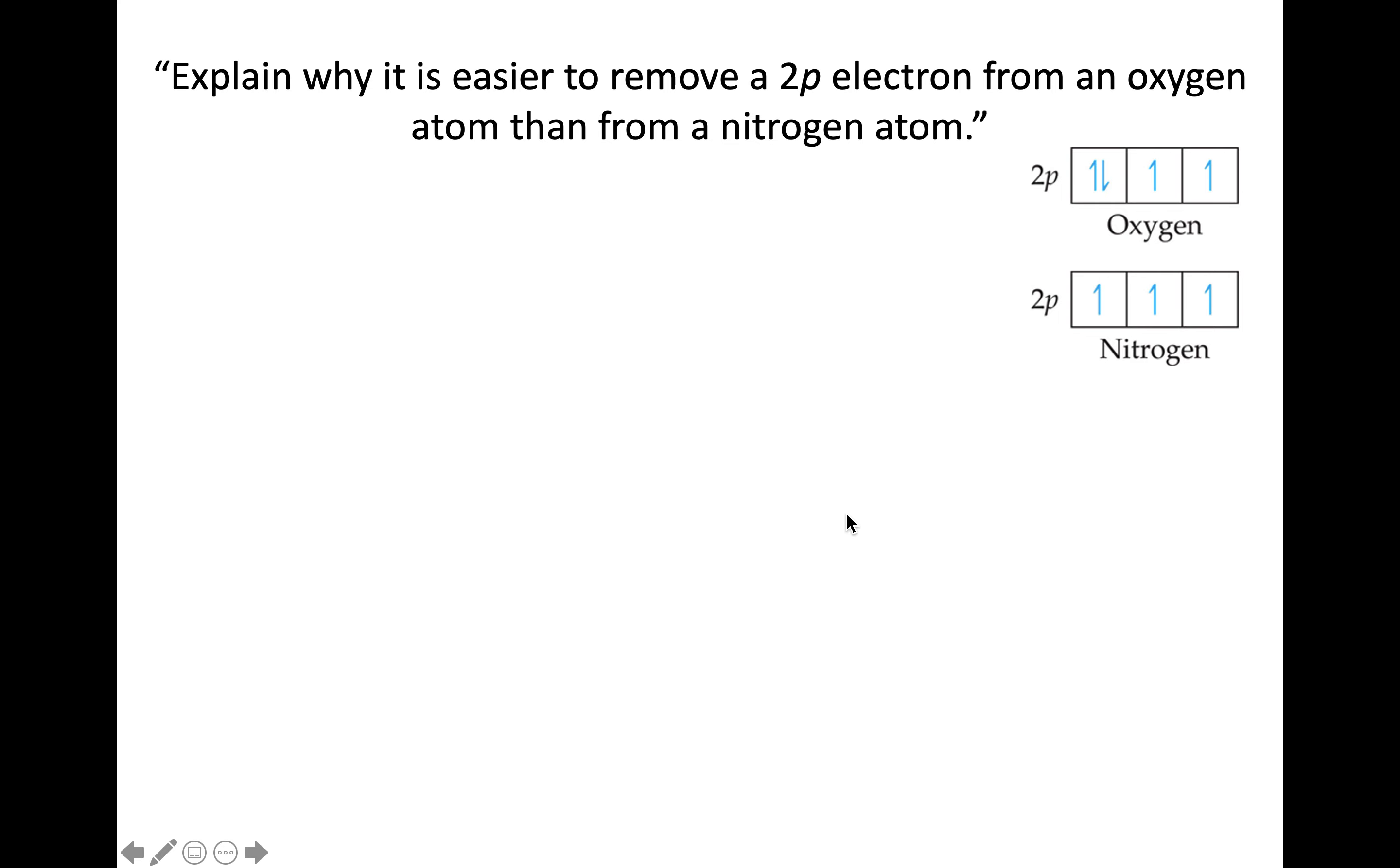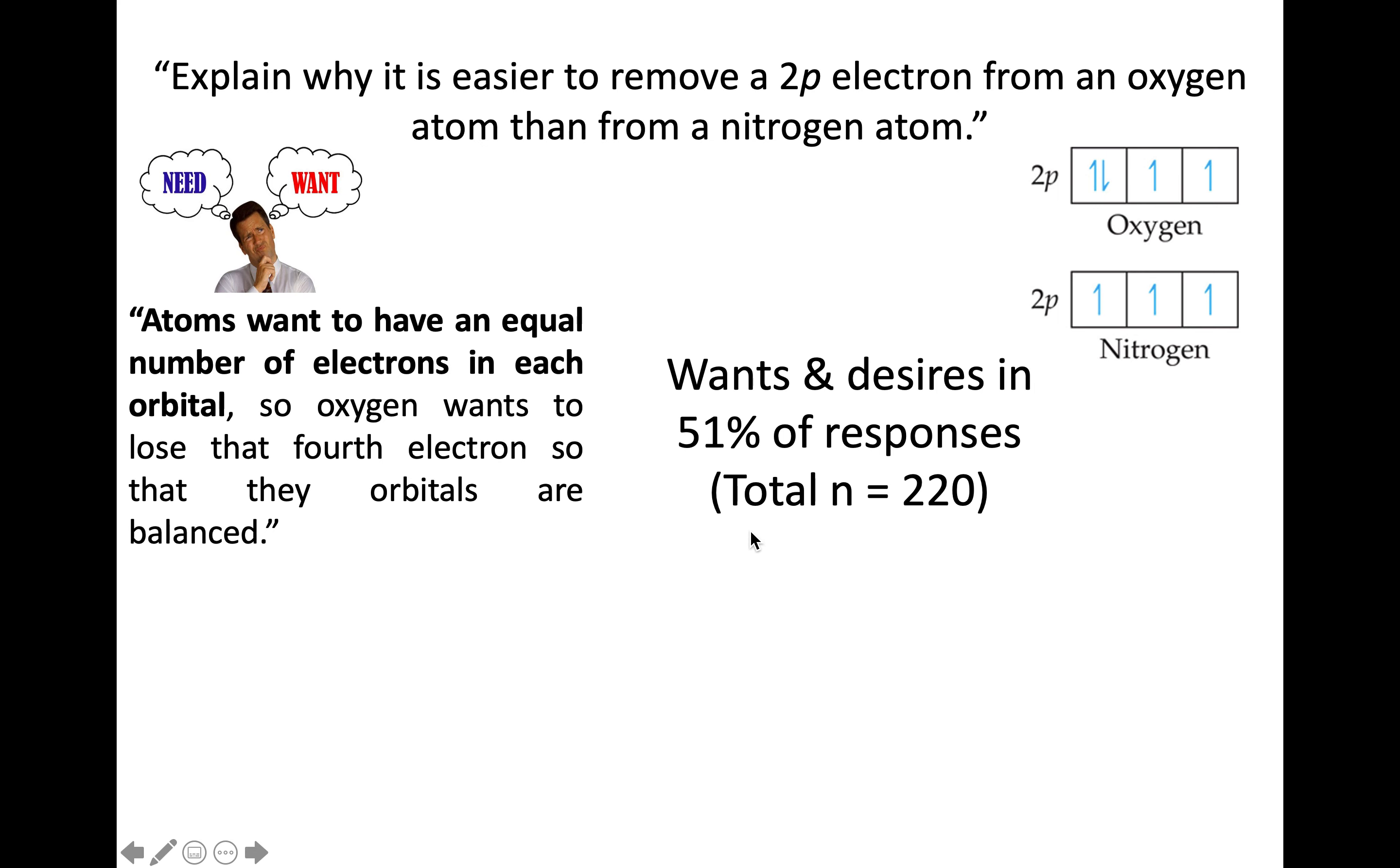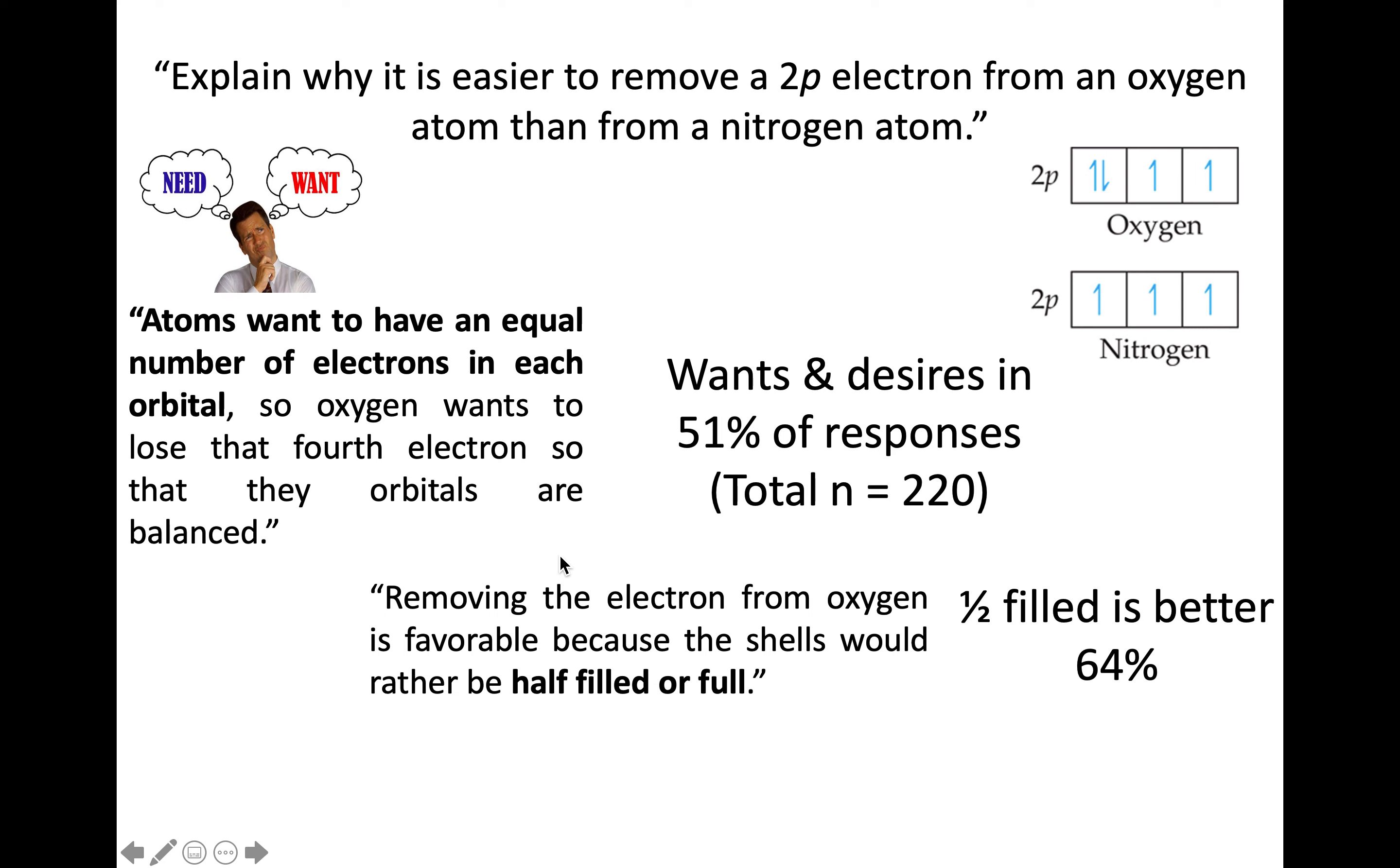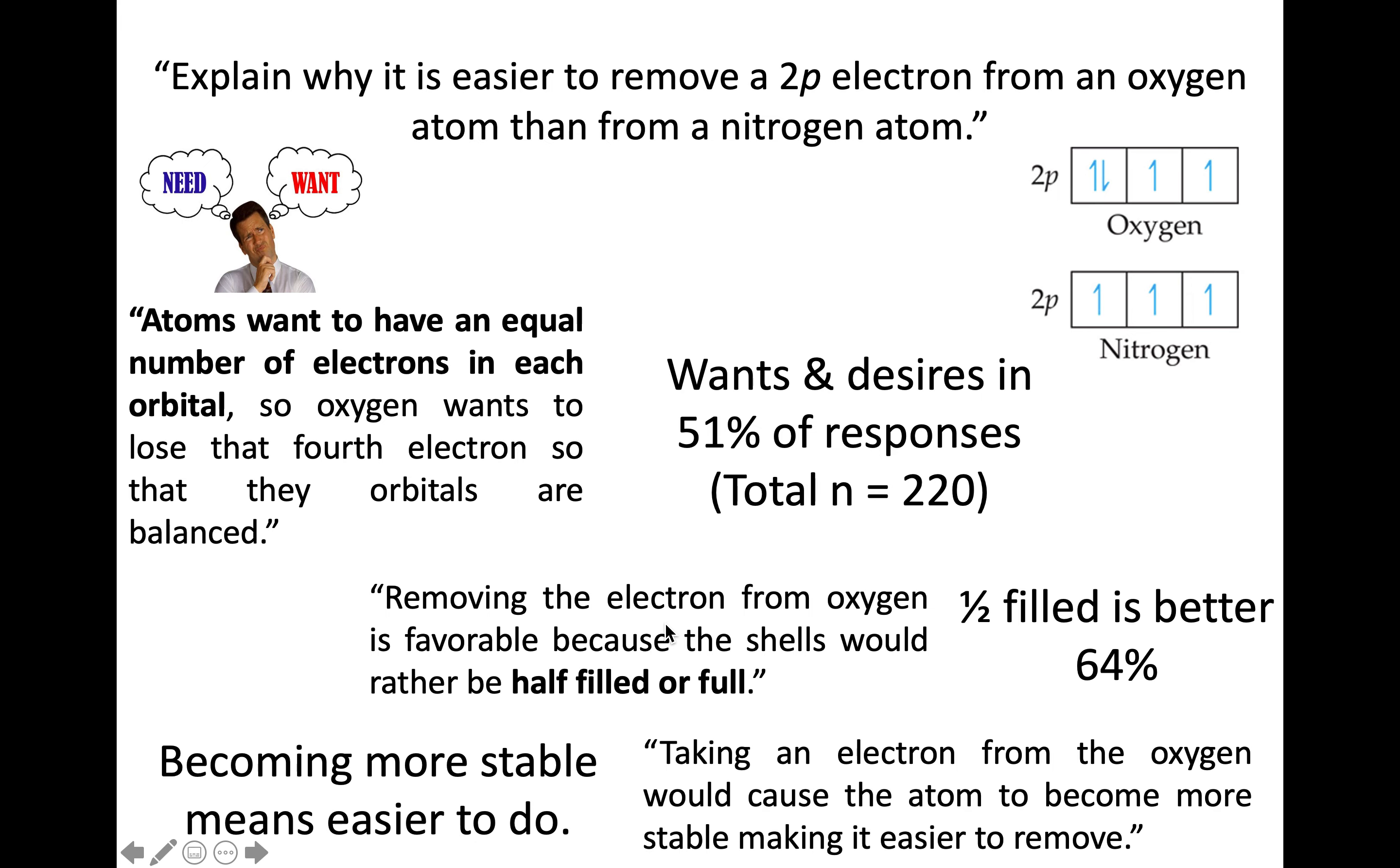This is another standard question posed open-ended: Why is it easier to remove a 2p electron from oxygen than from nitrogen? This is also often expressed in terms of wants and desires. About half the responses were in that category—wanting to have an equal number of electrons, or the rationale that octets are good and half-filled is also good. This idea that half-filled shells are better with no additional explanation. Again, students reaching for a pattern. And the idea that things becoming more stable makes them easier to do persists. 'Taking an electron from oxygen would make it more stable, so that makes it easier to remove.'